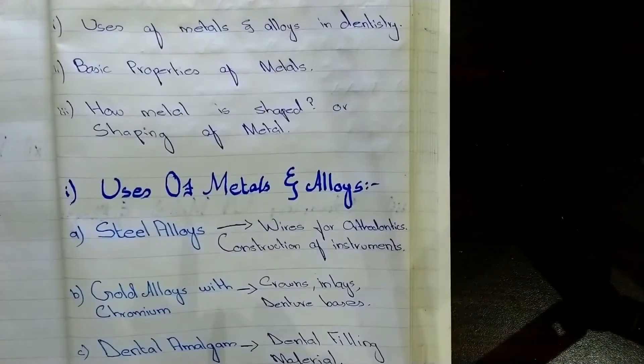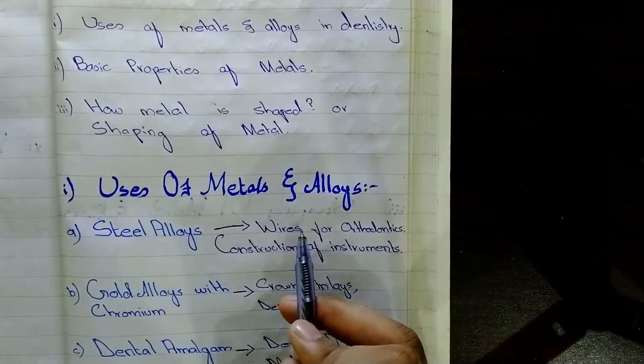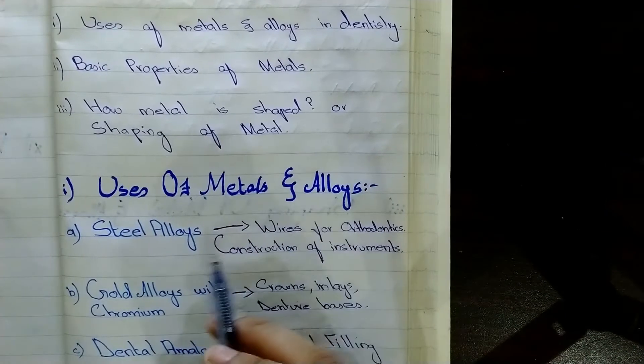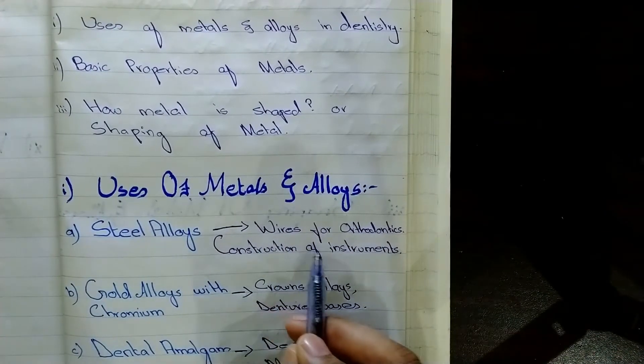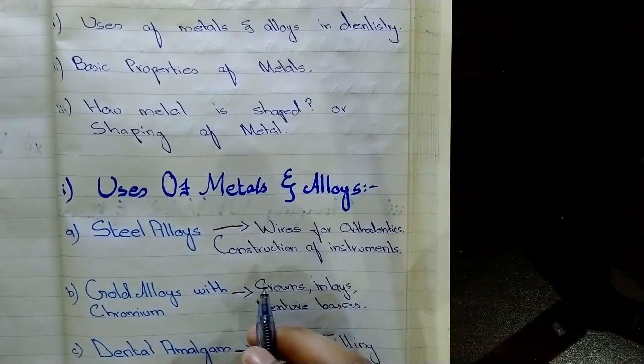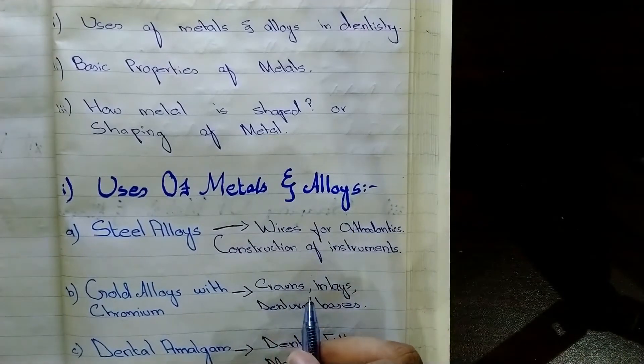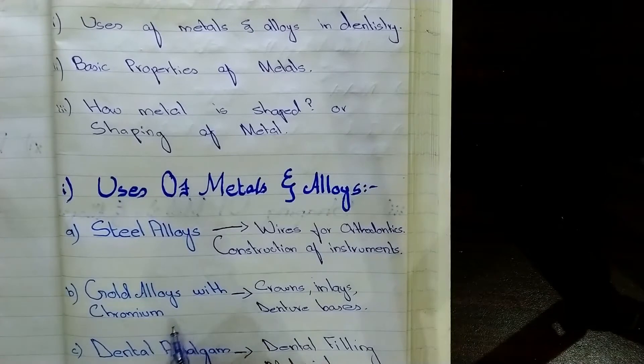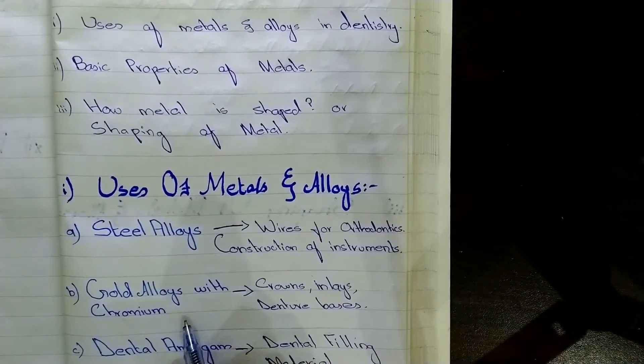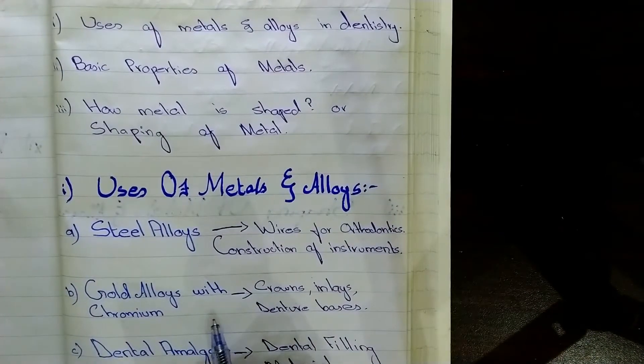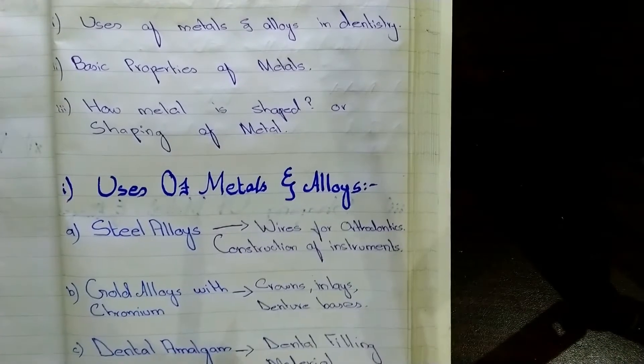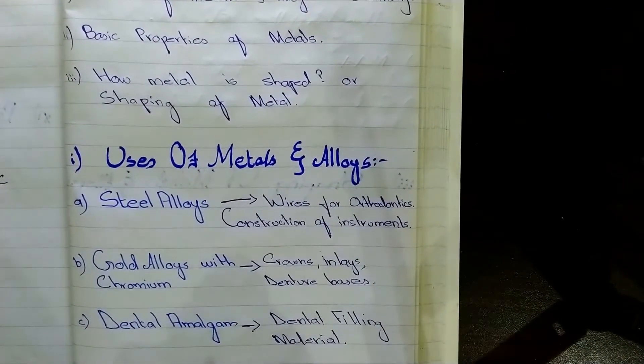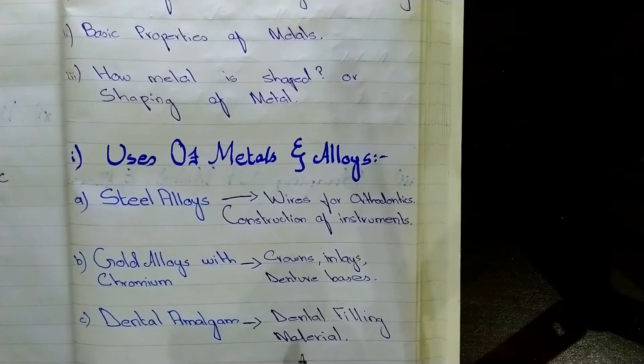The uses of metals and alloys: First of all, the steel alloys are used for making wires for orthodontics and for the construction of instruments. Gold alloys with chromium in it are used for crowns, inlays and denture bases. And thirdly, the dental amalgam is a widely used dental filling material.